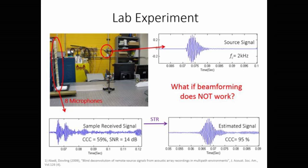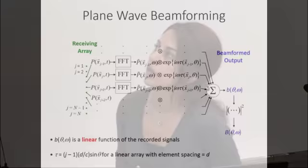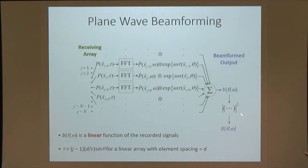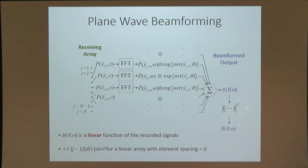Let me briefly talk about plane wave beamforming. We have N receivers and N received signals. We take the Fourier transform to get P as a function of frequency. We multiply each signal by an appropriate time shift τ, sum them up, and take the magnitude squared—that is the beamforming output. In plane wave beamforming, the output is a linear function of all the signals.